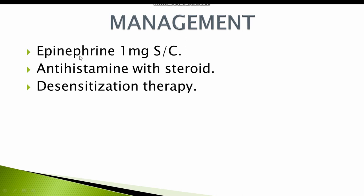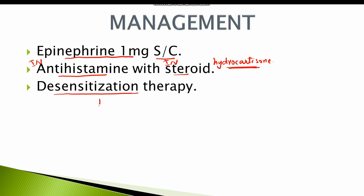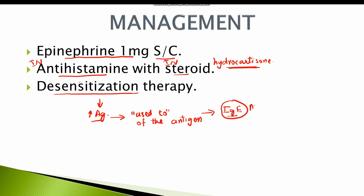Management of anaphylactic reaction is with epinephrine 1 mg subcutaneous, along with IV antihistamine and IV steroids such as hydrocortisone. Permanent treatment can also be done with desensitization therapy, in which an increased dose of the antigen is given to the patient on subsequent visits. The idea is to make the immune system accustomed to the antigen by occupying all the IgE antibodies on the mast cells, so that subsequent exposure does not cause type 1 hypersensitivity reaction.